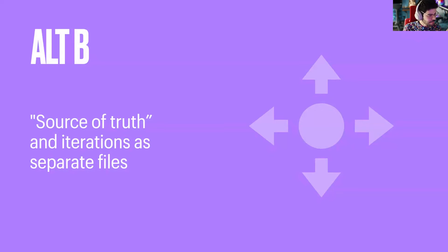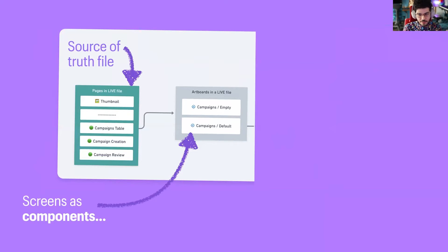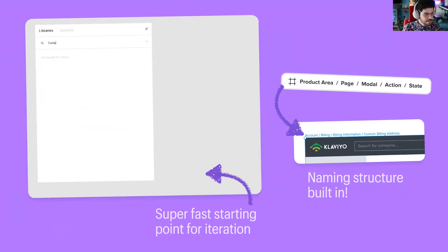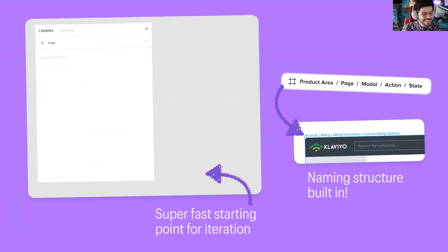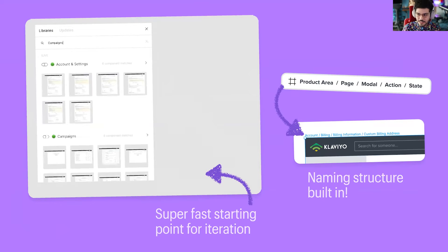The other idea: what if we make the source of truth and iteration separate? We can have a source of truth file that includes only what is live today in the product. Each of those screens can be set as components, and all live files are then published as a library that everyone can access. A designer starting a new project can create their file somewhere else and pull from that library of the source of truth to start working from there. You search for the screen you want to work on, drag it over, detach it, and you're ready to make edits.